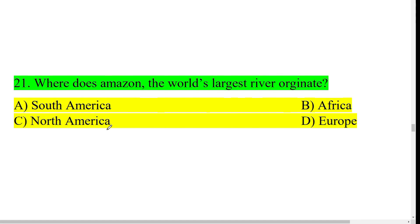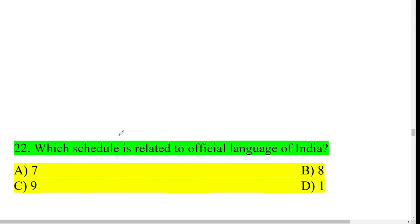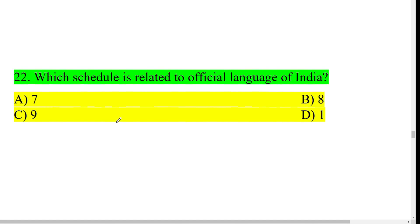Where does the Amazon, the world's largest river, flow? The Amazon flows through South America continent. The longest river is the Nile River.